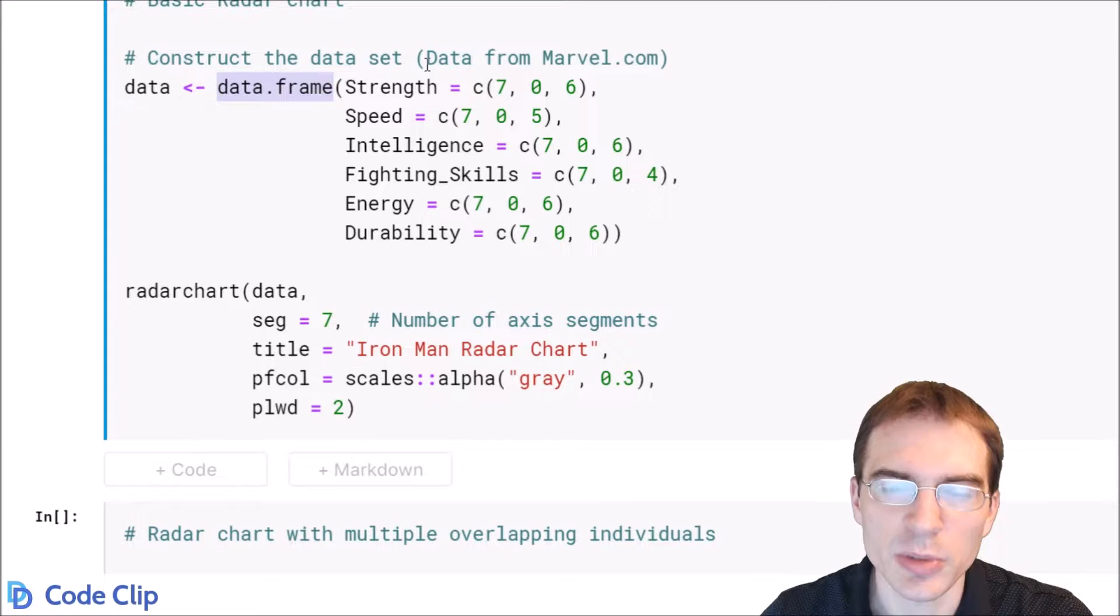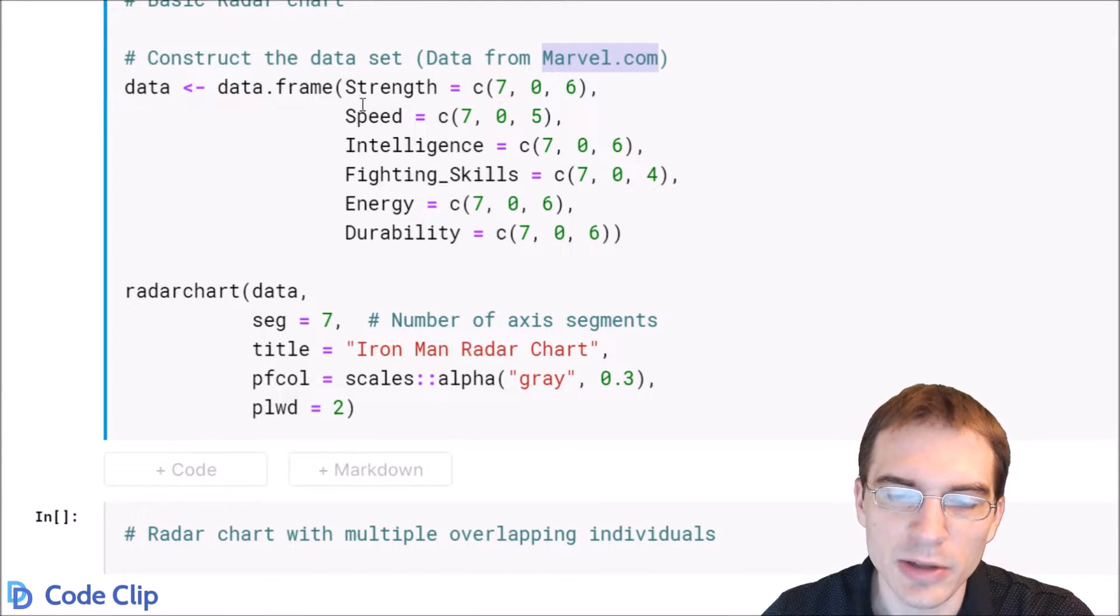In this case we're going to be using some data from marvel.com on different superheroes, and for the first one we're just going to make a radar chart for Iron Man. On their website they have different statistics for these characters from the comic books.